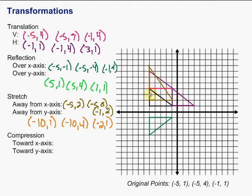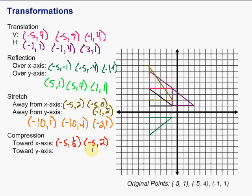We can also compress a figure. A compression is basically the same as a stretch, except you multiply by a number between 0 and 1 — typically a fraction like 1/2 or 1/3. If we compress toward the x-axis, we multiply the y-coordinates. For example, compressing by a factor of 1/2: negative 5, 1 becomes negative 5, 1/2; negative 5, 4 becomes negative 5, 2; and negative 1, 1 becomes negative 1, 1/2. The figure would be squished down toward the x-axis.